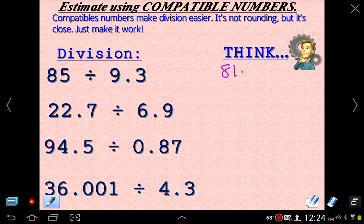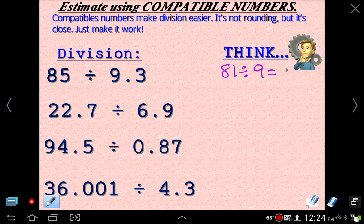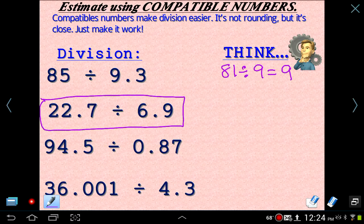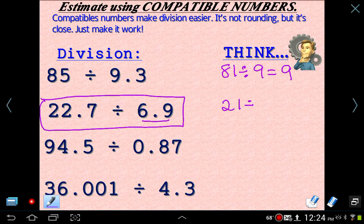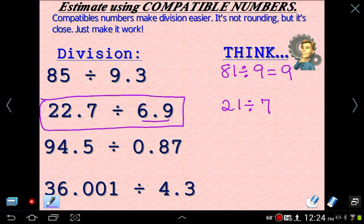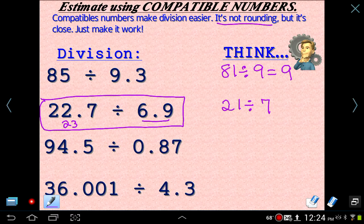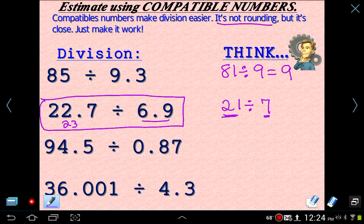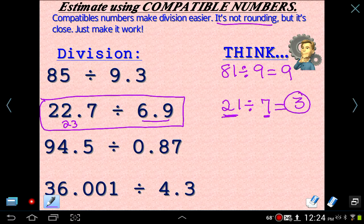So for this one, we thought 81 divided by 9, which is 9. Now this one, the next one here, what do we want to think? This is 22.7. This is almost 7. What if we did 21 divided by 7? I'm not really rounding. Now 22, if I rounded that, that would be 23. If I rounded it to the nearest whole. But, again, this is not rounding. It's just making them work. And 21 and 7, very much compatible. They are very much, they go into each other. That's how it works. And that's easy to do in my head. 21 divided by 7 is 3. So that would be a pretty good estimate for 22.7 divided by 6.9.